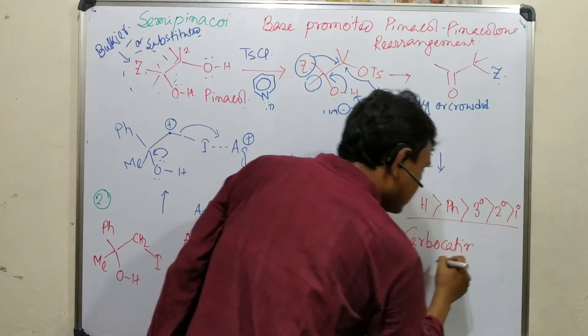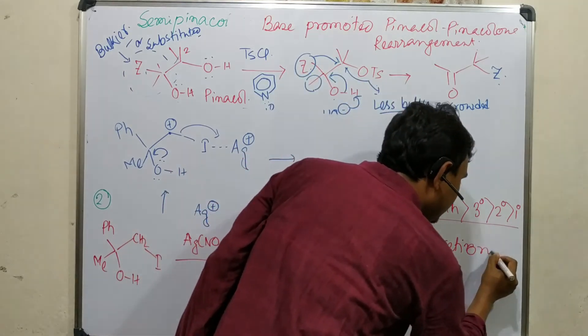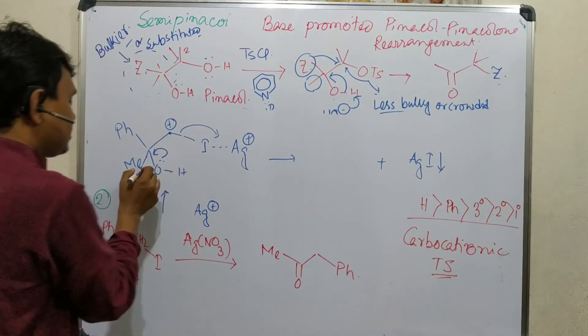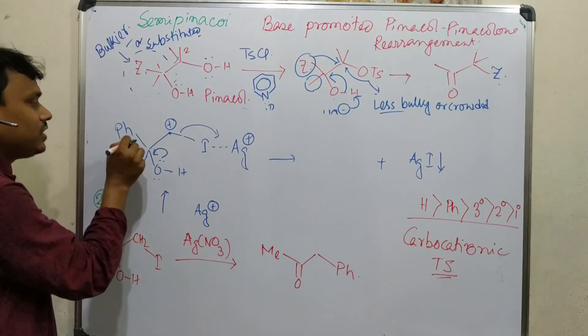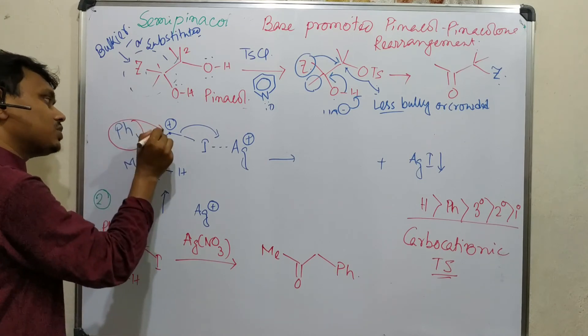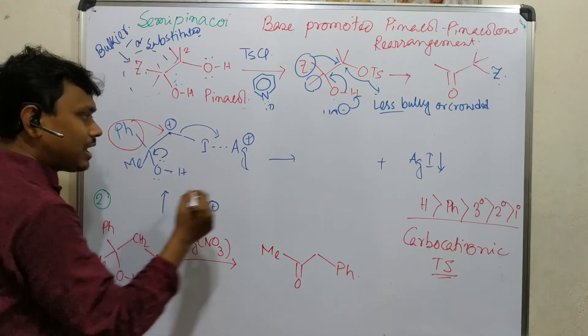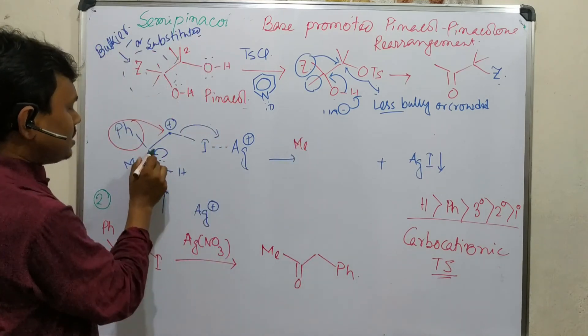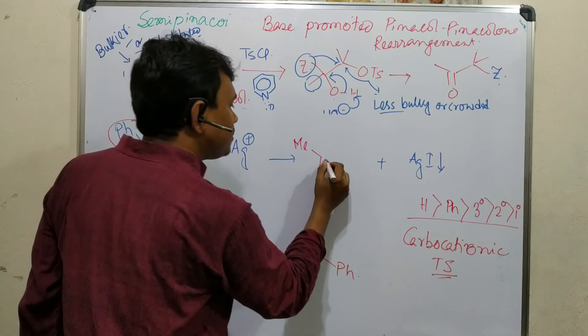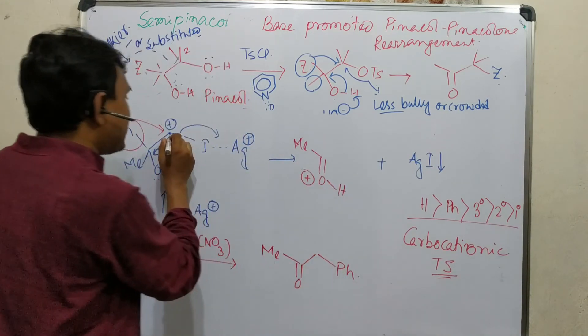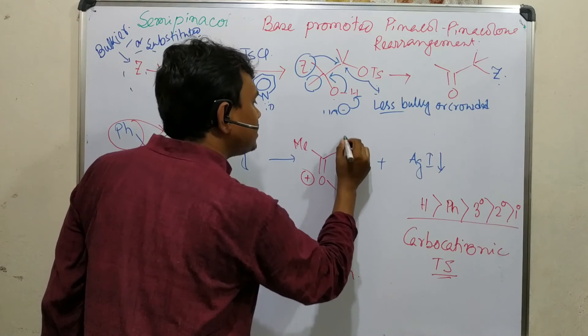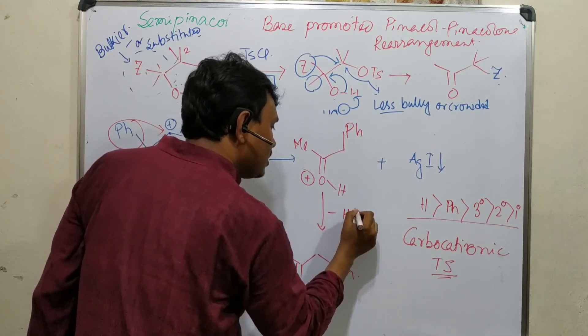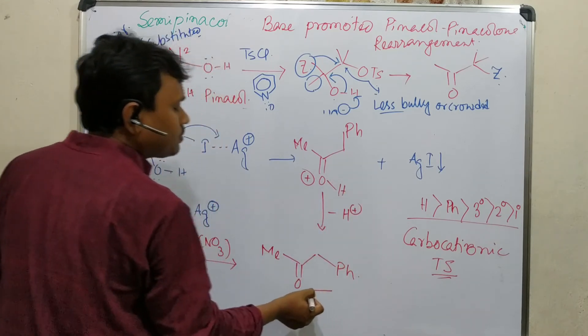So here there is methyl and there is phenyl. Phenyl's migratory aptitude is more, so it will migrate. And consequently what will happen, methyl will remain here, this oxygen will remain protonated means OH plus, and here phenyl will be attached to this CH2. If it eliminates one proton, then this will be produced.